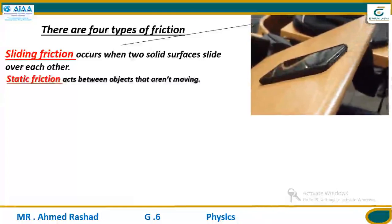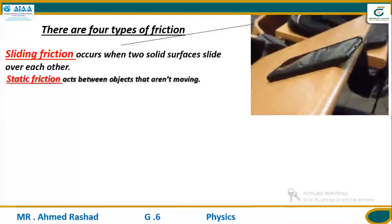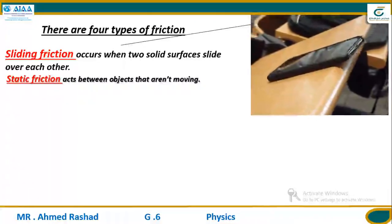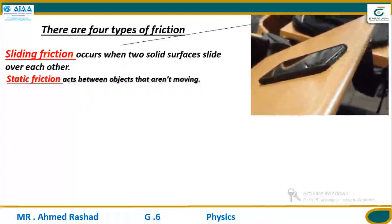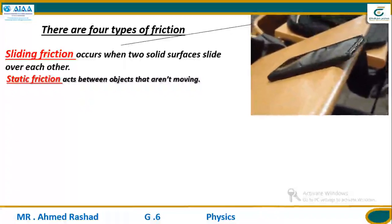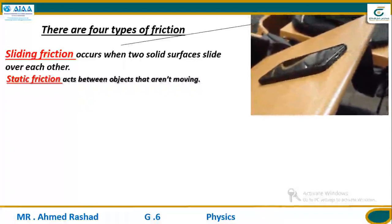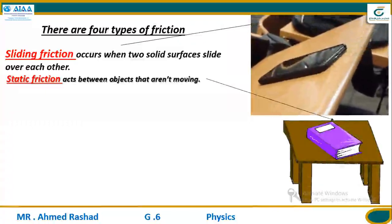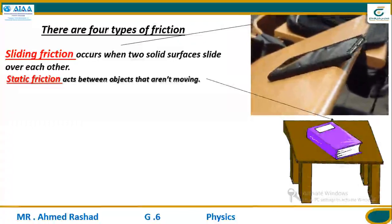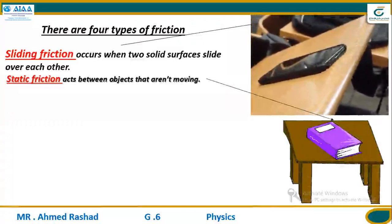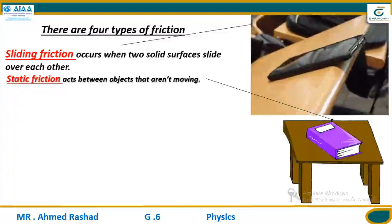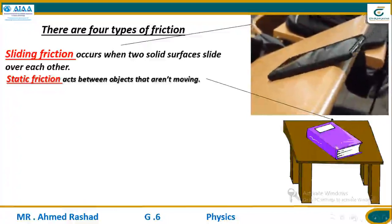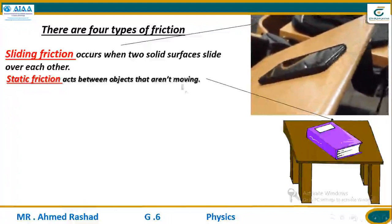Number two: static friction. What is the meaning of static? In physics, static means not moving — objects aren't moving or are not in a moving state. Static friction acts between objects that aren't moving. For example, between a block and a chair — the friction that occurs between the block and the surface of the chair is called static friction, which acts between objects that aren't moving.